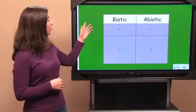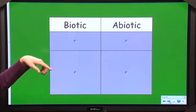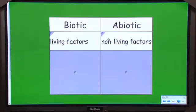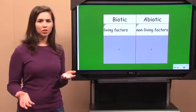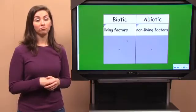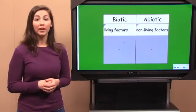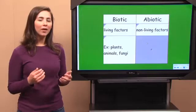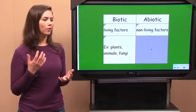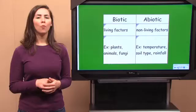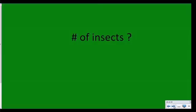Let's make a T-chart. We've got biotic over here, abiotic on the right. This second row is going to show our definitions: living factors and non-living factors. What might be the living, the biotic factors of an area? Well, what about the plants, the animals that live there? Fungi, too? What about abiotic factors? What about how hot or cold the ecosystem is, or the type of soil? Amount of rainfall is probably pretty important too. What about the number of insects — would that be biotic or abiotic? Biotic. Insects are totally living, right?